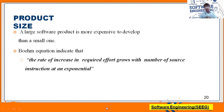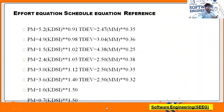The rate of increase in required effort grows with the number of source instructions exponentially. So if you have a large software product, automatically the number of programmers will increase and the source instruction code will also increase. There are some equations developed for reference — PM stands for programmer month and KDSI for the number of source lines.